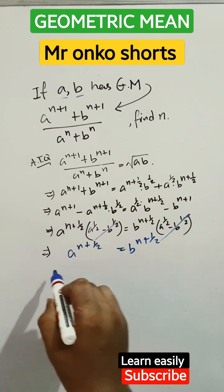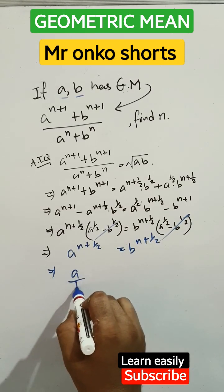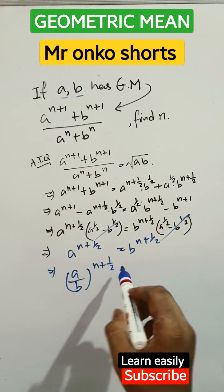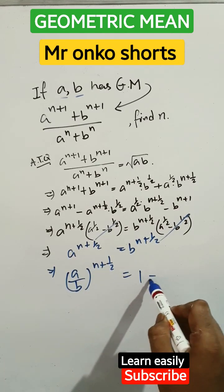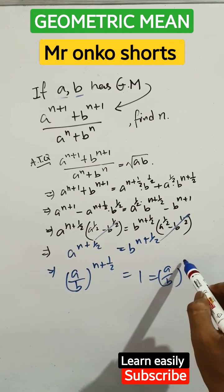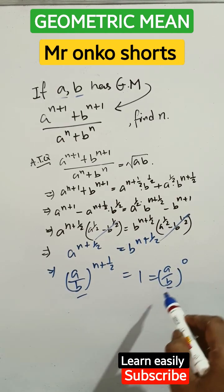So we can take a over b whole to the power n plus half equals to one. So one can be written as a over b whole to the power zero. Since bases are equal, according to the properties of indices, n plus half equals to zero.